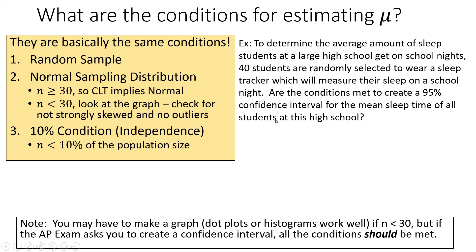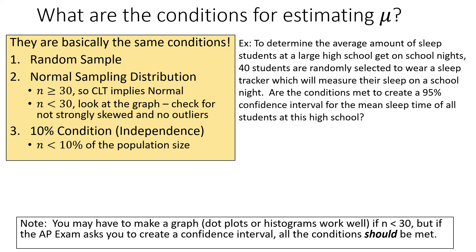Our conditions are almost the same as for proportions — in fact they are the same conditions, just the middle one is checked differently. We still need a random sample to eliminate bias — that's usually the easy one, generally given to you. We need a normal sampling distribution, and for that we need our sample size to be greater than or equal to 30, in which case the CLT implies normality. Or if the sample size is less than 30, one option is that the population is already normal.